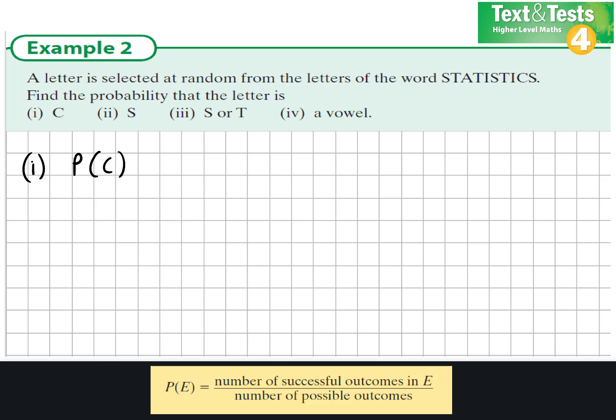The probability of it being C would be 1 in 10. That's because there is one C out of all the 10 letters. So there is one favorable outcome out of a total of 10 outcomes.